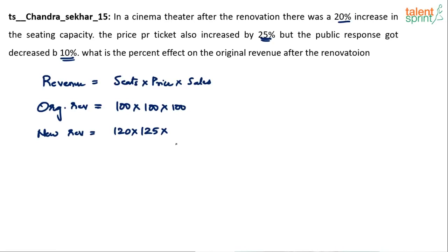The public response decreased by 10%. Public response decreased by 10% does not mean 10% less tickets will be sold based on the original 100 — it means 10% less seats will be occupied out of the new 120. So don't reduce 10% from 100; reduce 10% from 120. Sales is nothing but public response, or the number of people walking in.